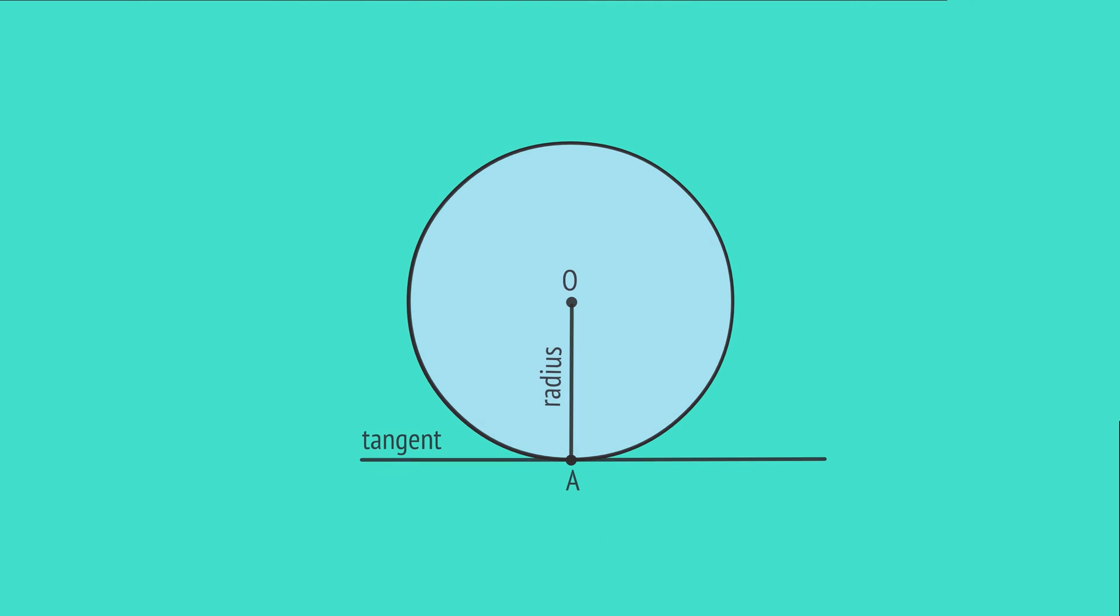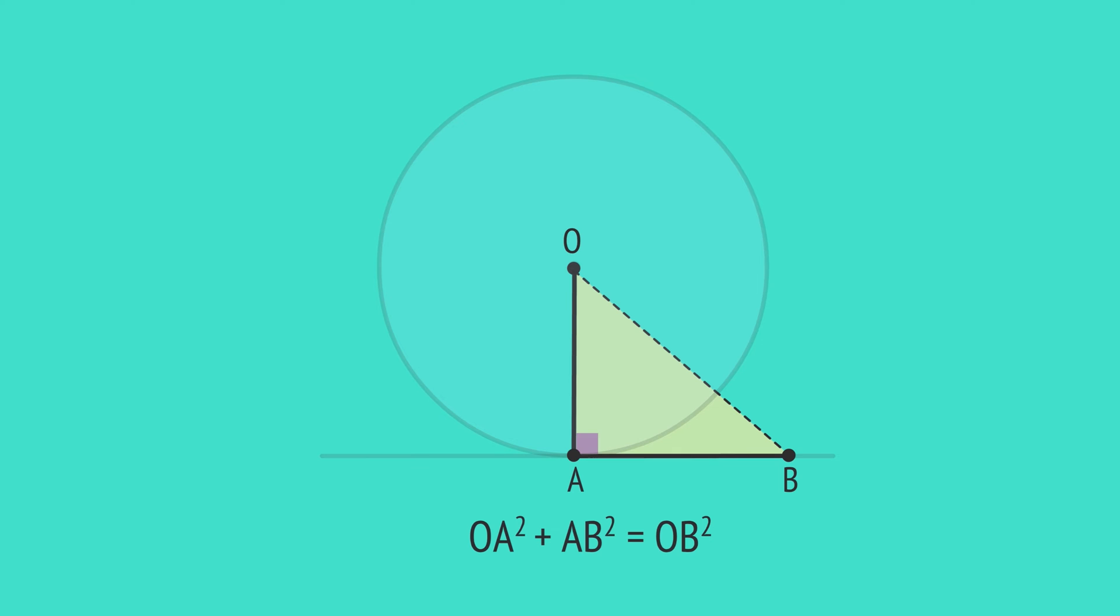A radius always meets a tangent at 90 degrees. So, any other point on the tangent connected to the origin O will make a right-angled triangle. And so we can apply Pythagoras to give the relationship between these lengths.